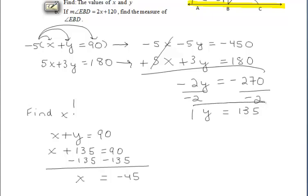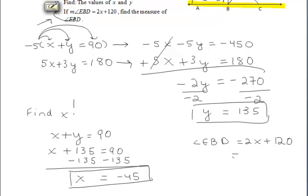So we found part a. We found our value for y. We found our value for x. But part b is asking us for the measure of angle EBD. And that is represented by the expression 2x plus 120. Well, we've already solved for x. And we now know that x is negative 45. So we can substitute negative 45 in for x in that expression. And that helps us find that the measure of angle EBD is 30 degrees.